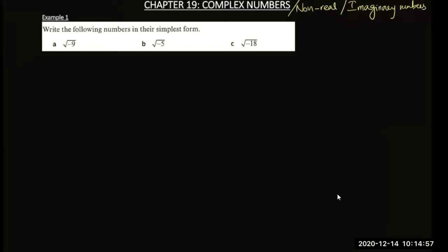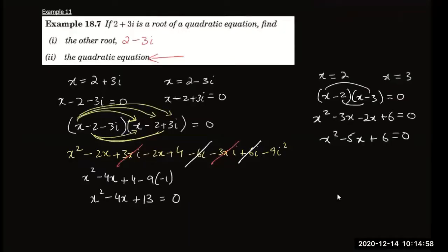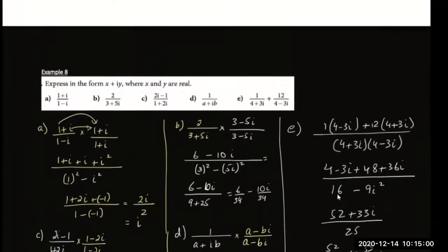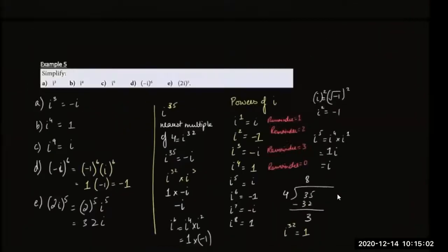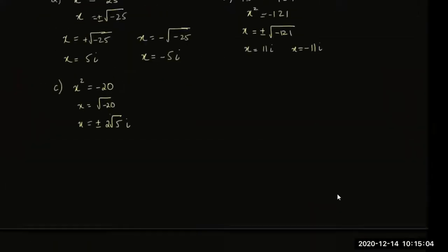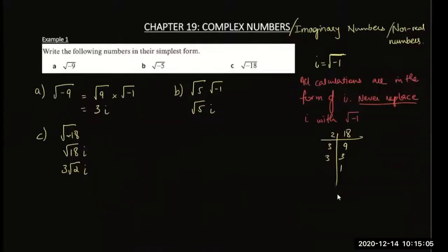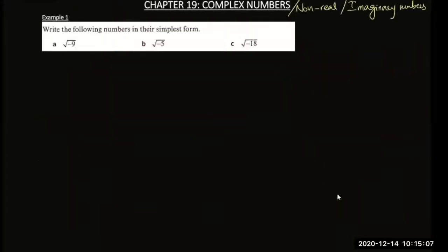A notation used is 'i' — iota. This notation is used to represent the square root of minus one. So i represents the root of minus one.